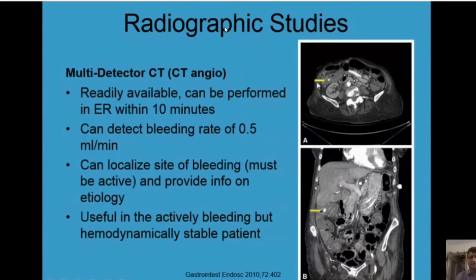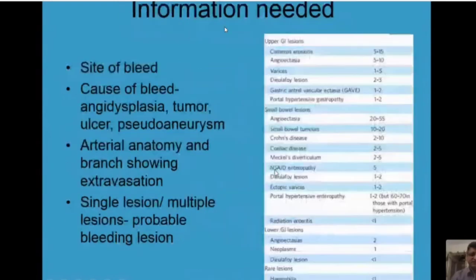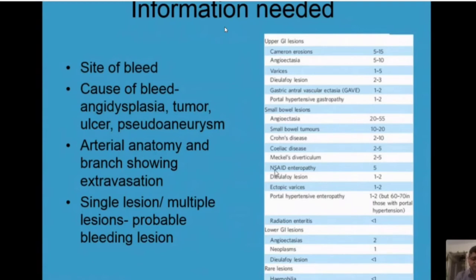That's a CT angiogram demonstrating an area in the hepatic flexure of active extravasation of contrast. Why is CT scan important? It will give us a lot of information — the site of bleed, the cause of bleed. On an angiogram I may see a bleed but not know if it's angiodysplasia, a tumor, an ulcer, or a pseudoaneurysm. CT will give me the arterial anatomy and show me the branch causing the extravasation. More than that, it will also tell me in cases of angiodysplasia whether it's a single lesion or multiple lesions. When there are multiple lesions, we do not treat all of them — we treat only the lesion which is actively bleeding.